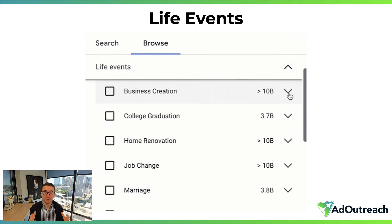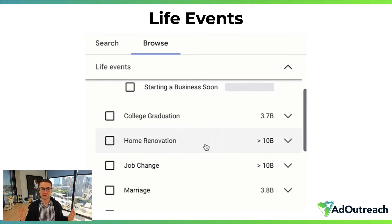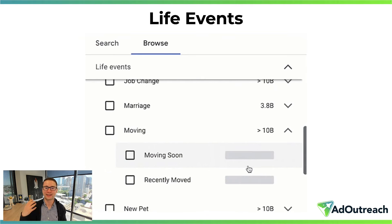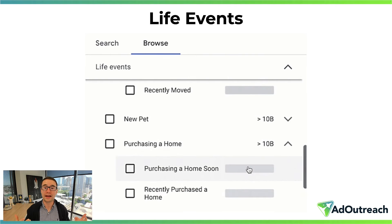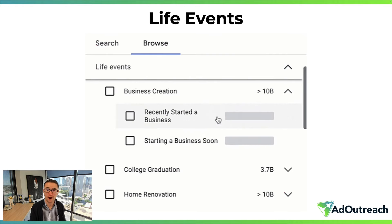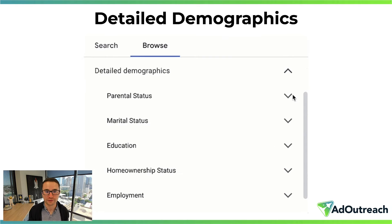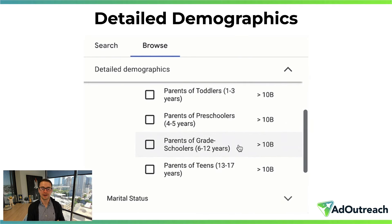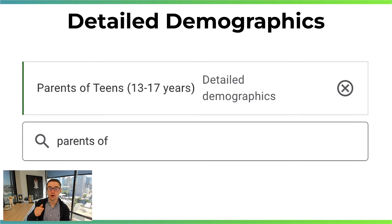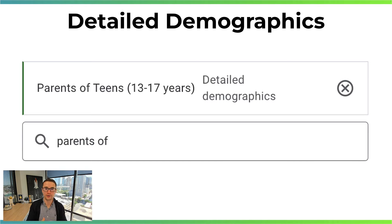Life event targeting includes starting a business, college graduation, moving, or getting married. Google collects data on these major life events. There's also detailed demographics like parental status — one of our clients does SAT prep, and we help them target parents of teens aged 13 to 17, because those are the people most likely to be looking for SAT prep services. The parents make the decision, so we use detailed demographics to reach the right people.